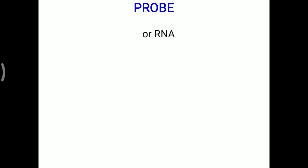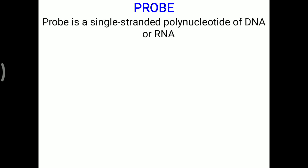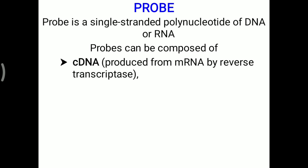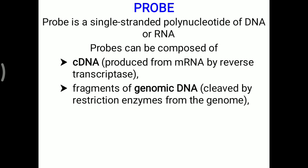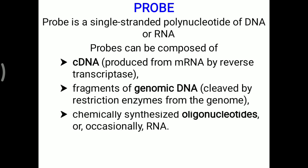Today's topic is about probes in molecular biology. A probe is a single-stranded polynucleotide of DNA or RNA — made up of nucleotides, the same nucleotides used to build DNA or RNA. Probes can be composed of complementary DNA (cDNA) produced from mRNA with the help of reverse transcriptase enzyme, fragments of genomic DNA cleaved by restriction enzymes from the genome, or chemically synthesized oligonucleotides, and occasionally RNA. All of these can be utilized as a probe.